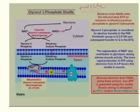The glycerol-3-phosphate shuttle is a bit more rapid, but it produces fewer ATP. And if you work out a lot, you know it produces a lot more heat.